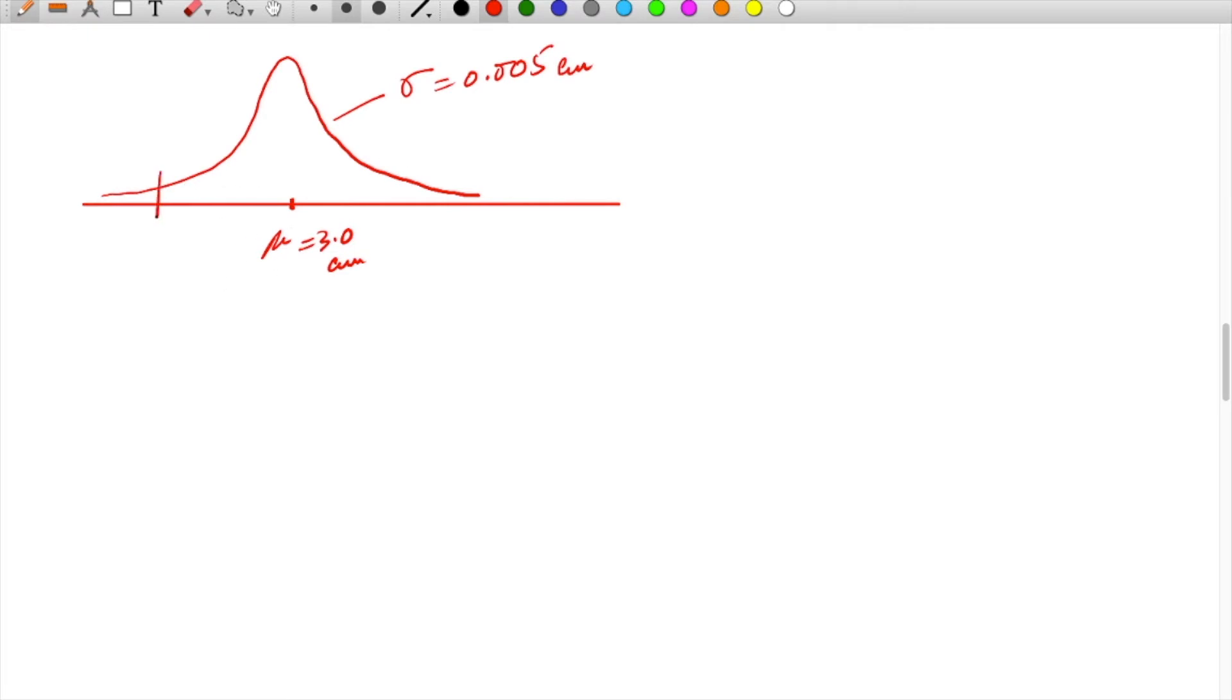The limit is 3.1 on one side and 2.9 on the other. Because the standard deviation is very low, the probability of getting ball bearings within these limits is very high—this area under the curve. The area under the curve for the limit 3.1 minus the area for 2.9 gives us the probability within limits.